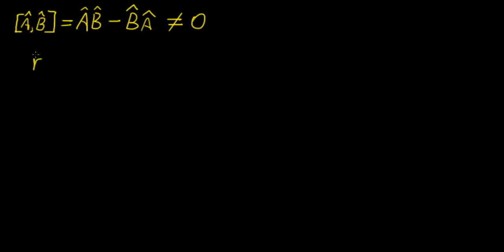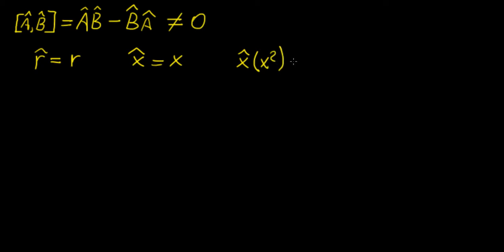First, I want to introduce some of the operators we deal with in quantum mechanics, the first of which is the position operator. The position operator is quite simple — it takes a coordinate and multiplies it by whatever function. An example would be the operator for x, which is just the coordinate x. If I apply this operator to some function, say x squared, we multiply x squared by x, giving us x cubed. That's all it does.